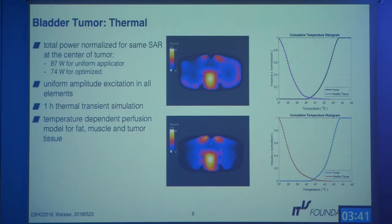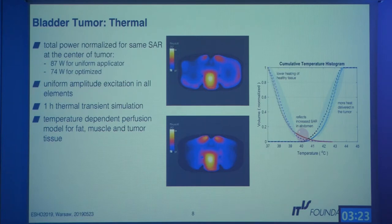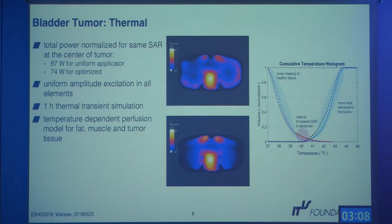Superposing the histograms for both applicators, the highlighted areas show that the optimized array achieves better heating of the tumor and simultaneously lower heating of healthy tissue. In one small region, the full array shows slightly lower heating in healthy tissue, corresponding to the superficial higher heating seen in the SAR profile, but this is relatively minor compared to the overall gains.